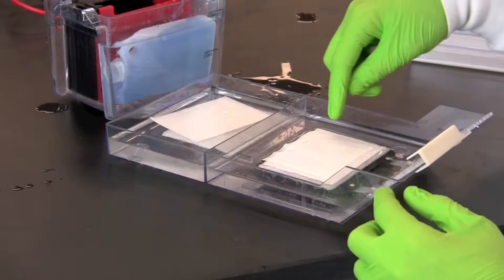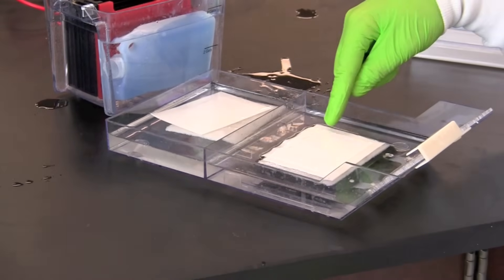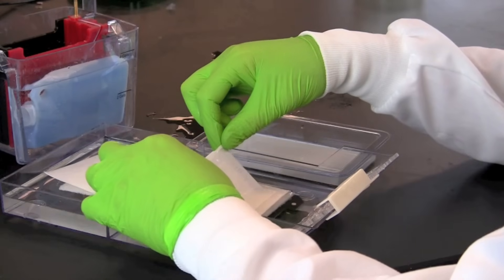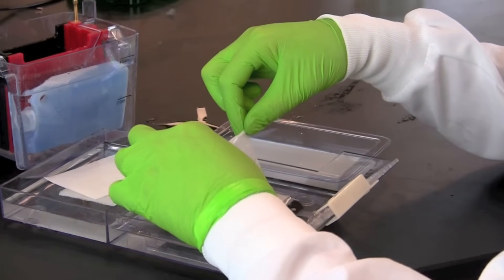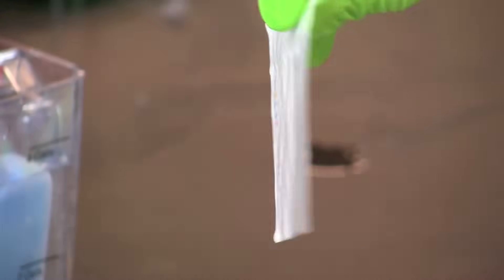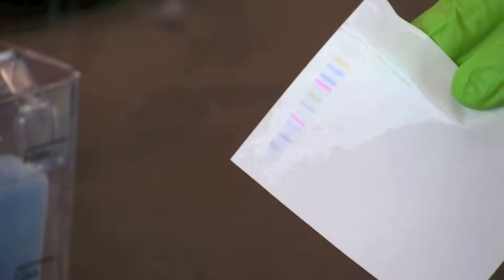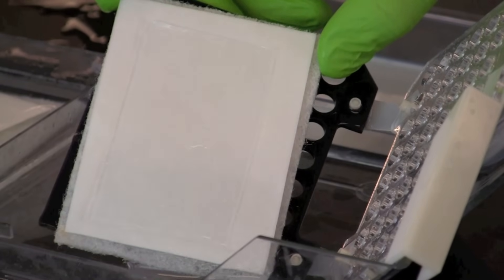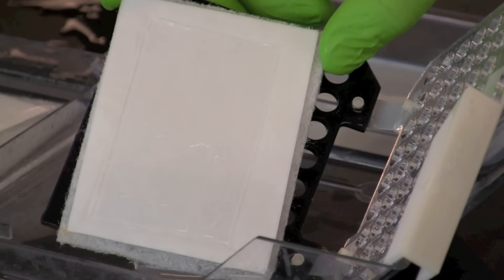As you remove the membrane, note that the proteins have been transferred from the gel to the membrane. Note that the kaleidoscope pre-stain standards have been transferred and can be seen on both sides of the membrane. You can also see that there are no longer any proteins on the gel.